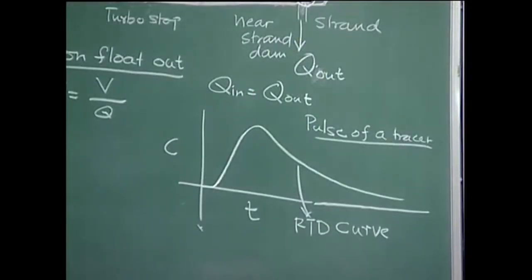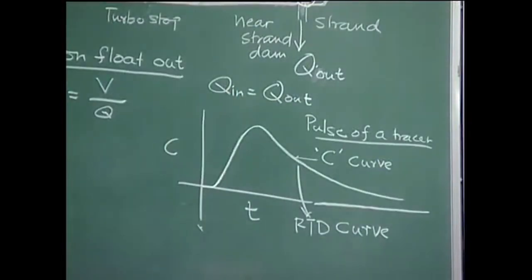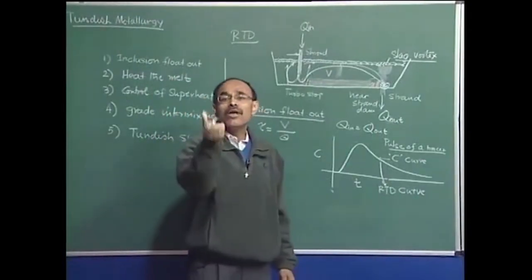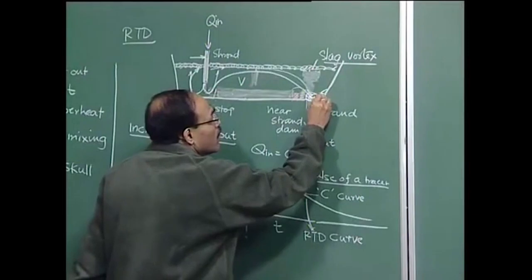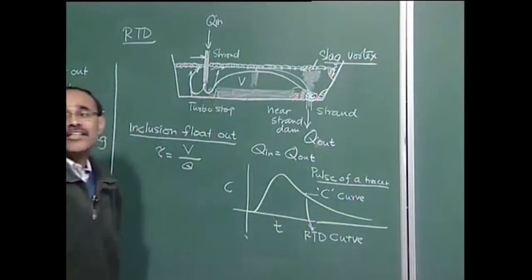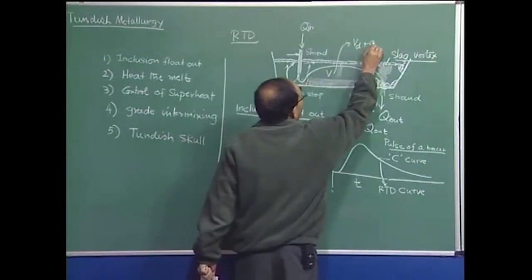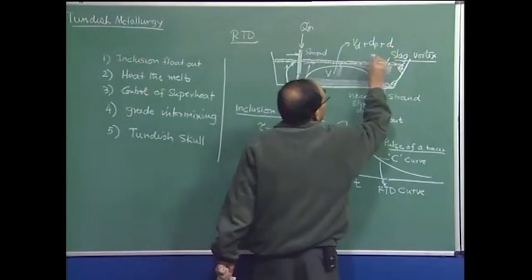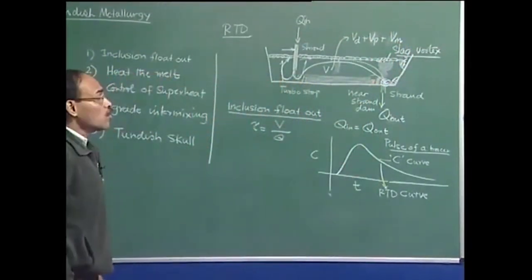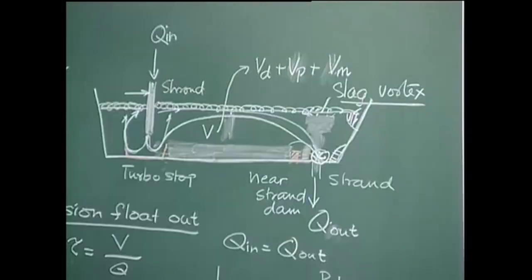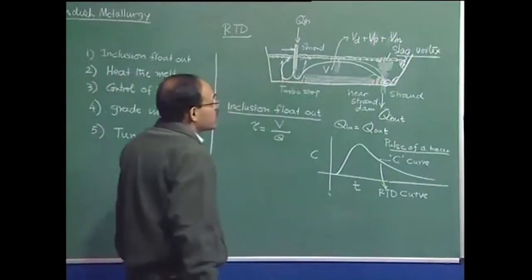In metallurgical engineering and steel making literature, this is also called the T-curve. On the basis of this curve, we can find out how much well-mixed volume exists in the Tundish, how much is the plug flow region, and also there may be dead volume regions — corners where the fluid is not moving at all. The total volume of the Tundish comprises dead volume, plug volume, and mixed volume — these are the three different types of volumes. By calculating the residence time distribution, we can find out each of these volume fractions.